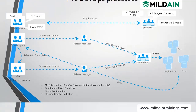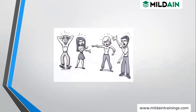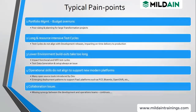To overcome all these issues, the DevOps process came into existence. Pre-DevOps teams are blaming each other — dev saying there is an issue in operations, ops saying there is an issue in your development. These are the typical pain points: working in silos, taking too much time, blaming each other, budget overruns, long testing cycles, lower environment build-out, and small environments taking a long time.